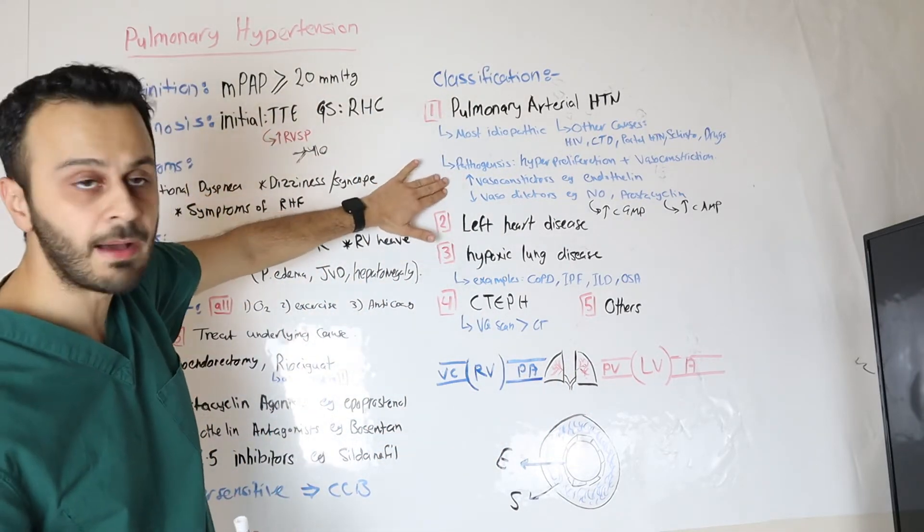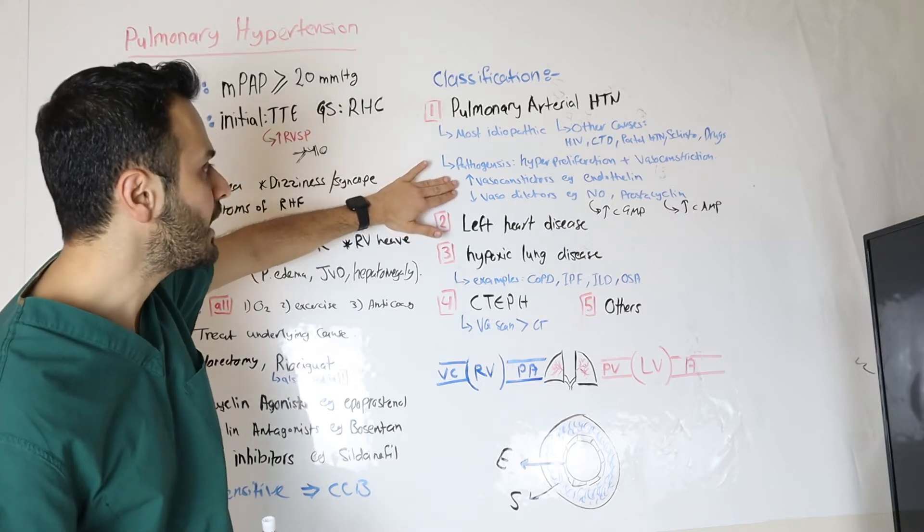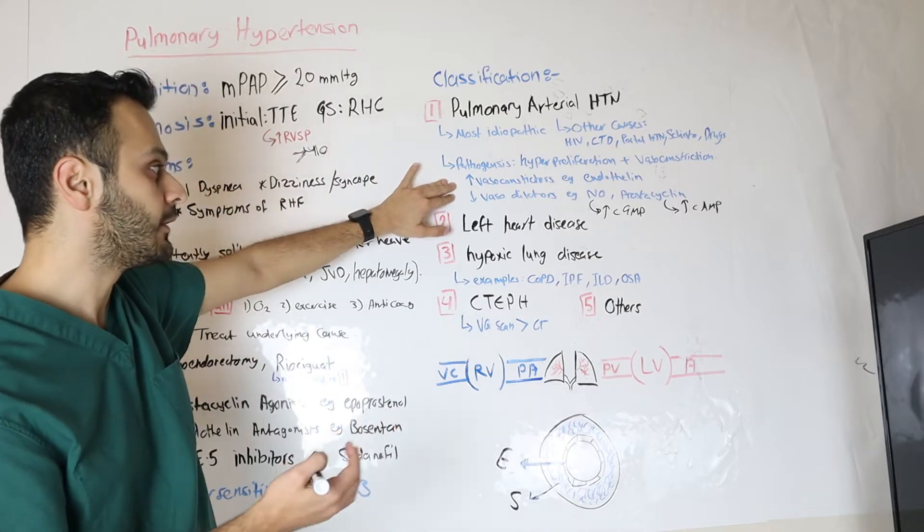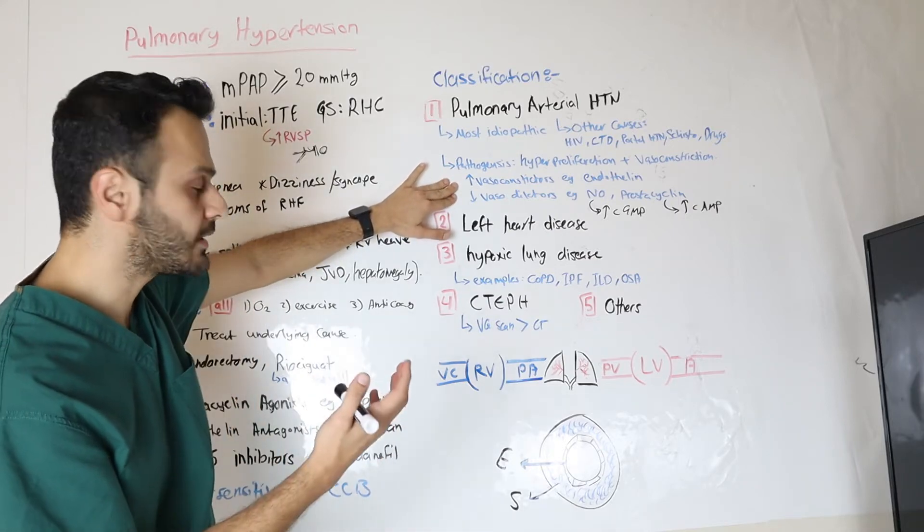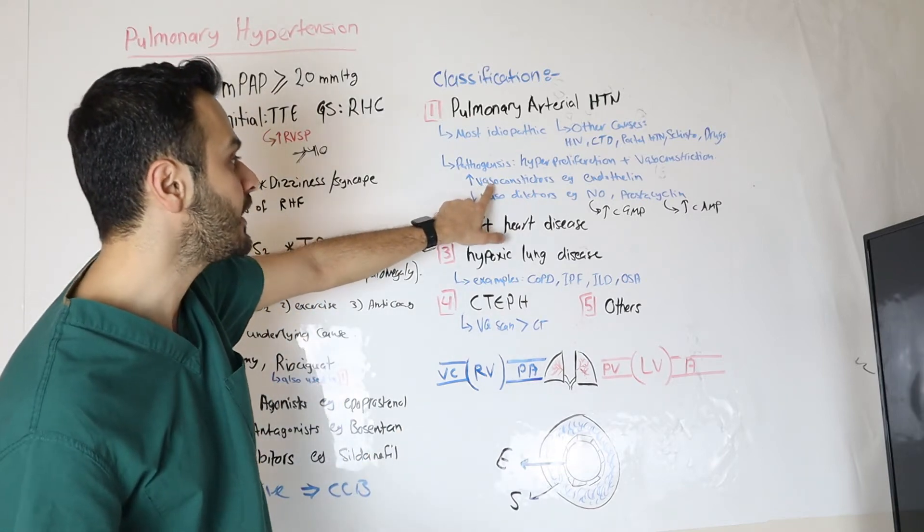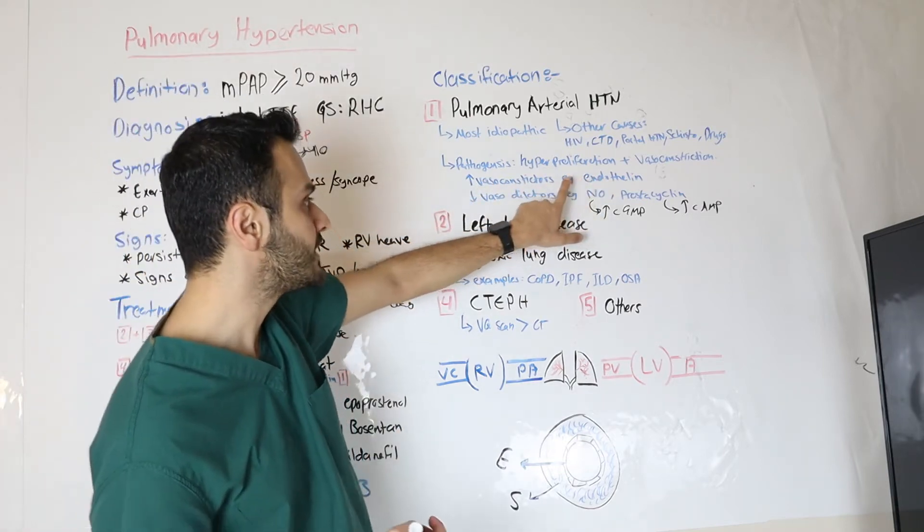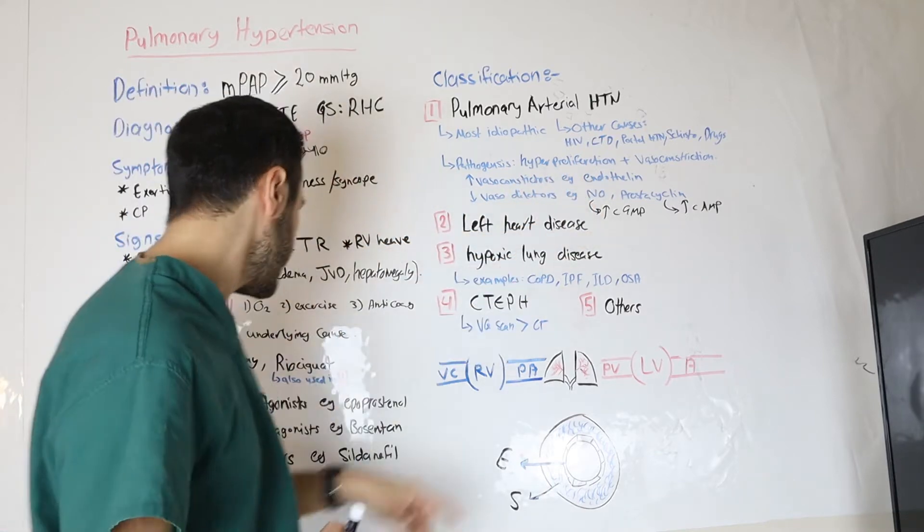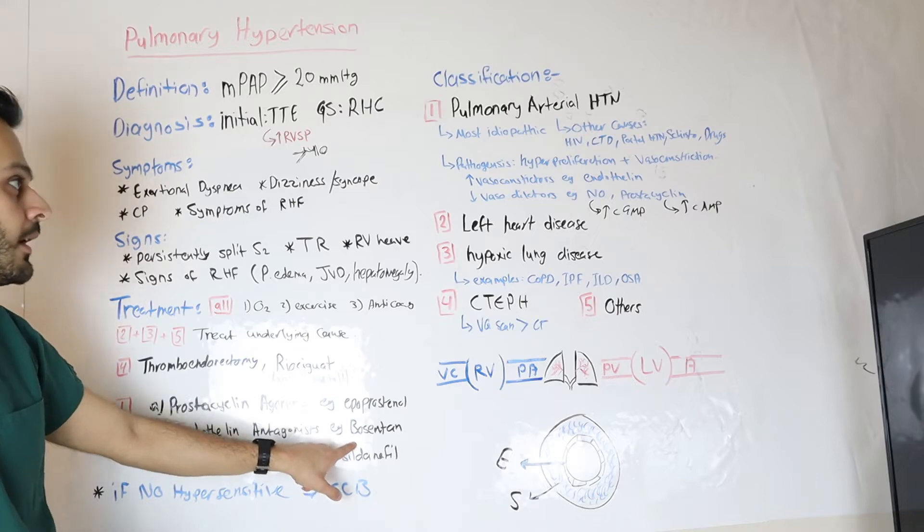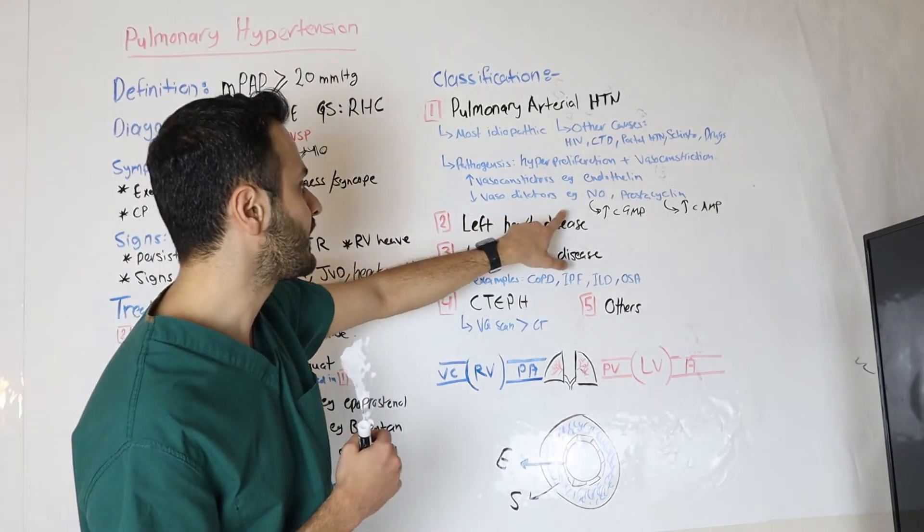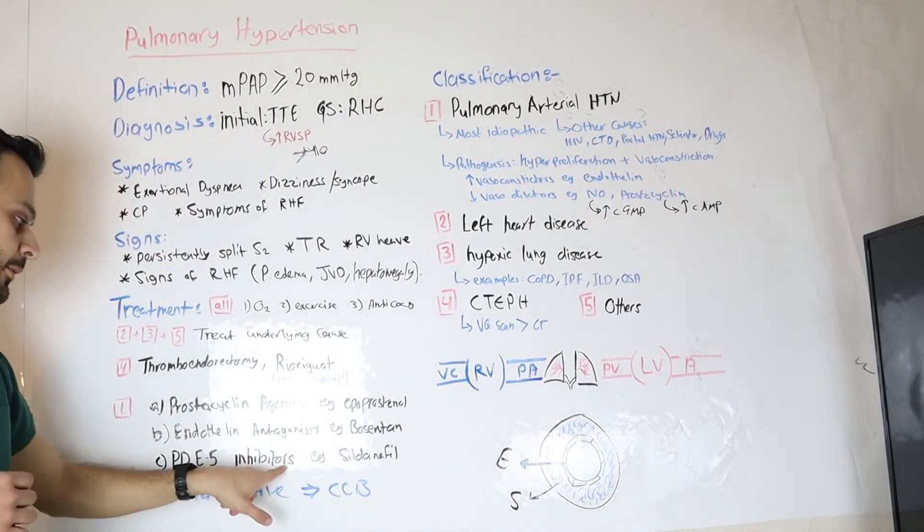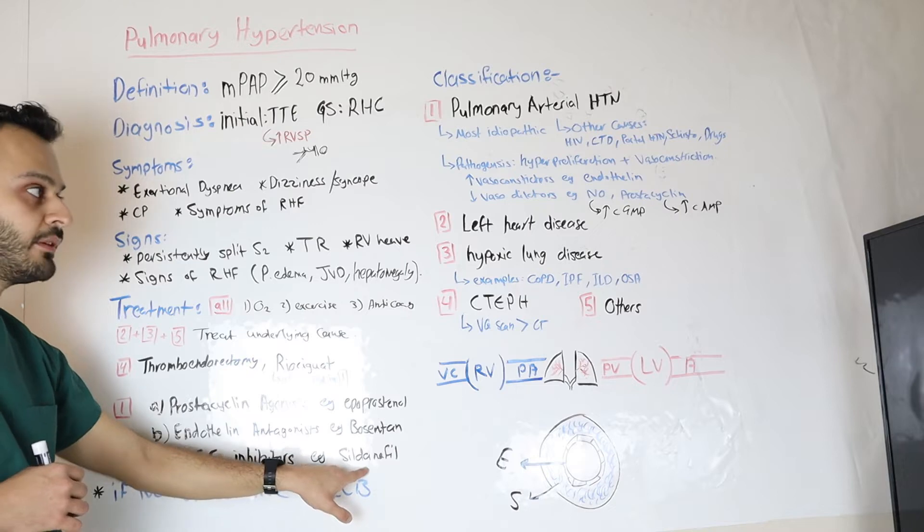So, knowing this pathogenesis, you will be able to easily understand what the treatment for this class is. And how would we reduce this constriction, how would we allow the vessels to dilate, is by giving an antagonist to the vasoconstrictors, such as endothelin antagonist, an example of that is bosentan. Other options is to give something that will increase the cyclic GMP level, such as phosphodiesterase inhibitors, and sildenafil is an example of that.